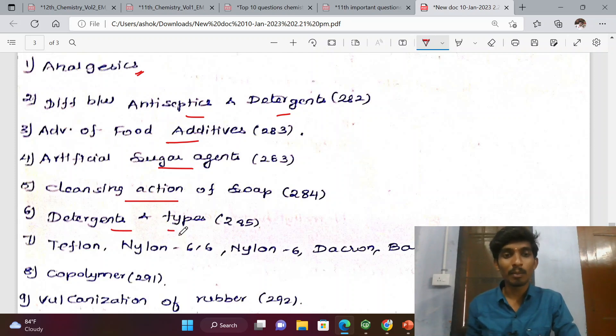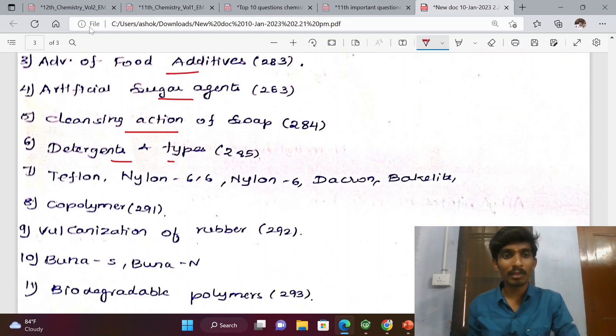Polymers: Teflon, Nylon, Dacron, Bakelite - these are important. Polymers and detergents are based on copolymer.